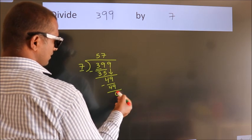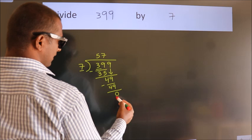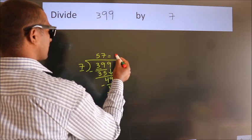After this, no more numbers to bring it down. And we got remainder 0. So this is our quotient.